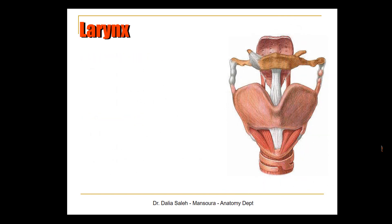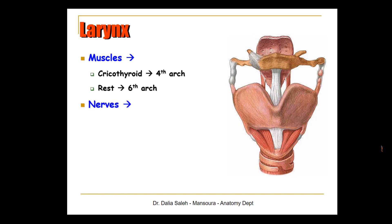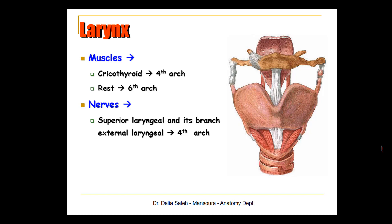Regarding the muscles and nerves of the larynx: the cricothyroid muscle, responsible for tension of the vocal cords, is derived from the fourth pharyngeal arch, while the rest of the laryngeal muscles are derived from the sixth pharyngeal arch. This explains the nerve supply as well. The superior laryngeal nerve and its branch, the external laryngeal nerve, supply the muscles derived from the fourth arch. The recurrent laryngeal nerve is the nerve of the sixth arch and supplies the rest of the laryngeal muscles, which are also derived from the sixth arch.